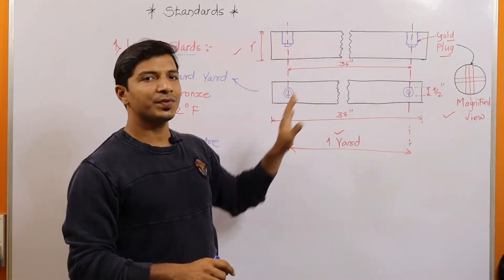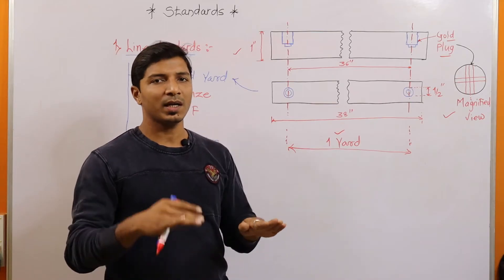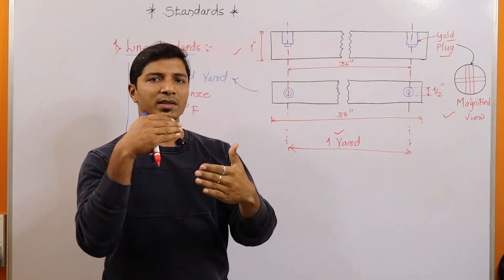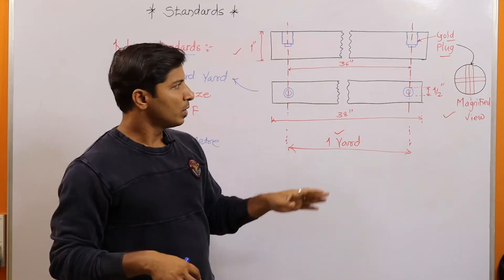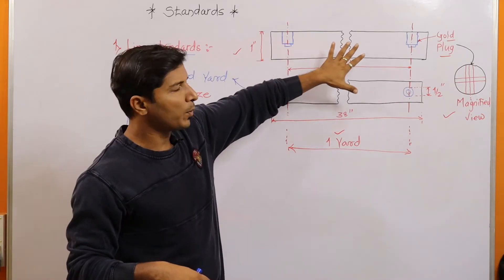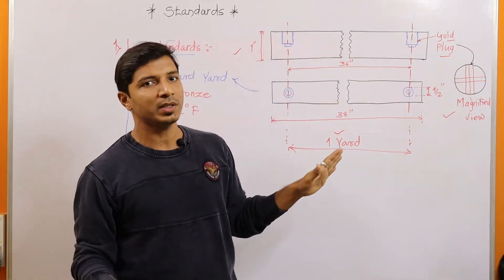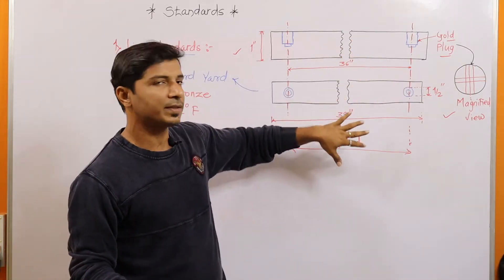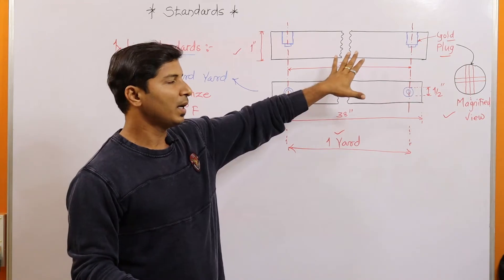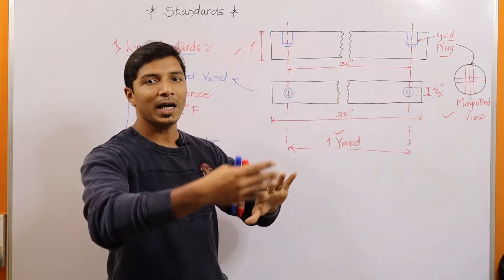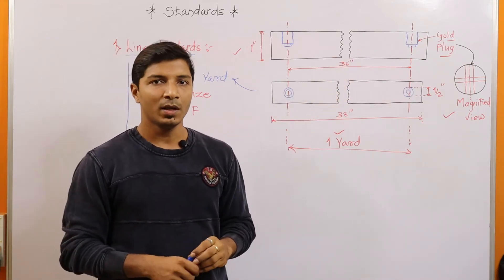These are considered primary standards. There are also secondary and tertiary standards. With the help of these primary standards, secondary and tertiary standards are calibrated, and based on those, instruments can ultimately be manufactured.